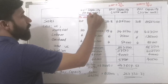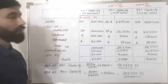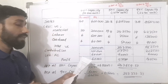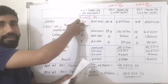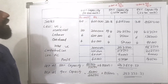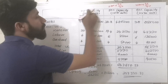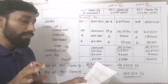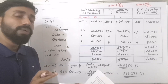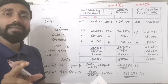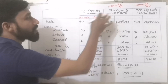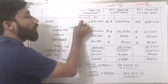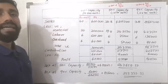For the sales figure, the selling price is Rs. 40 per unit. At 40% capacity, sales is Rs. 40 into 10,000, giving Rs. 4,00,000. At 50% capacity, the selling price falls by 3%, making the new selling price Rs. 38.80 per unit. At 90% capacity, the selling price falls by 5%.